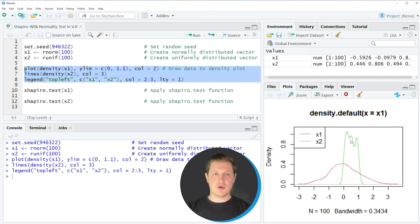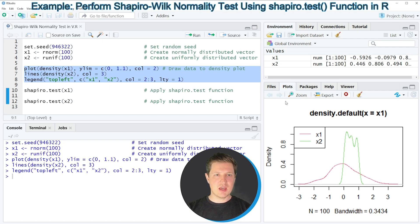If we want to perform a Shapiro-Wilk test to confirm our graphical illustration, then we can apply the shapiro.test function as you can see in line 10 of the code. In this line of code I'm applying the shapiro.test function to our first vector object X1.